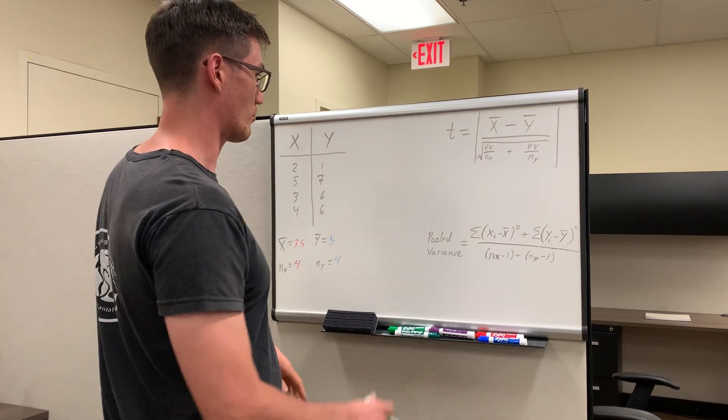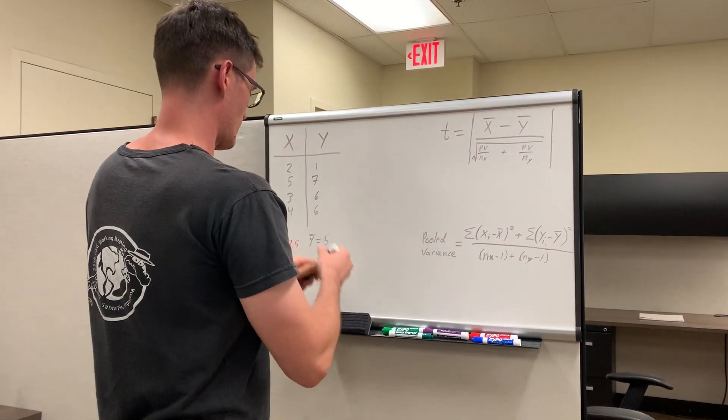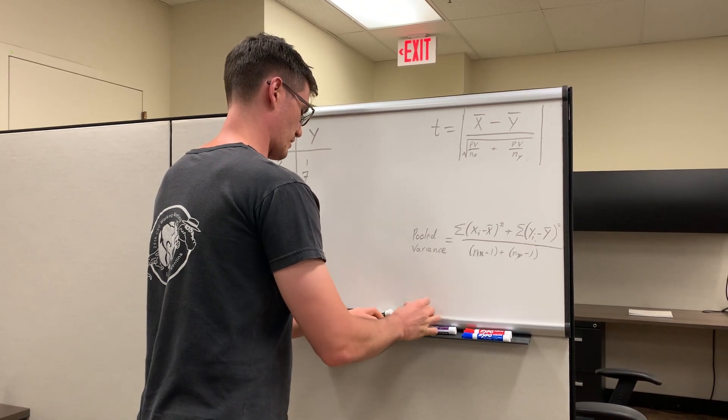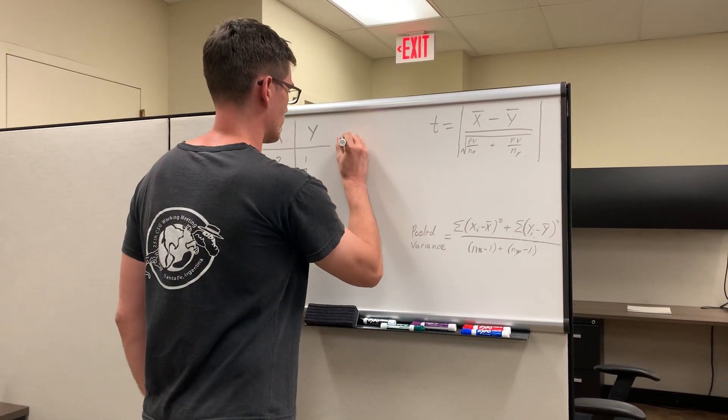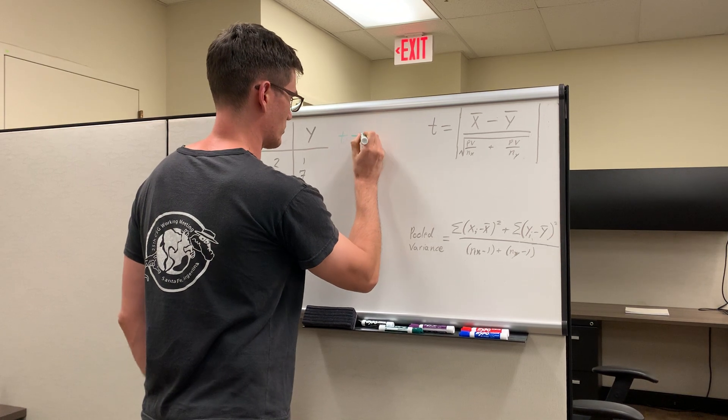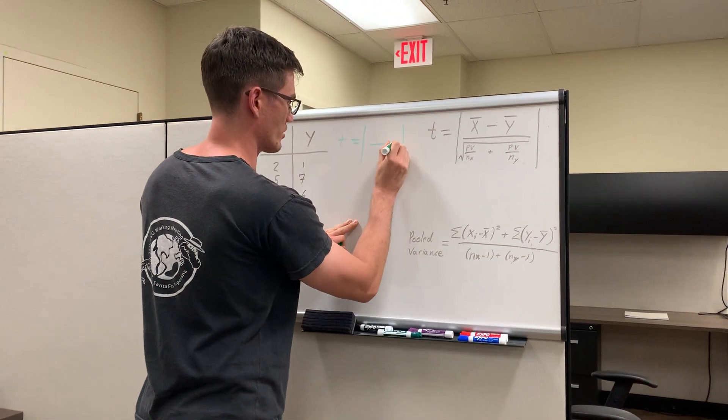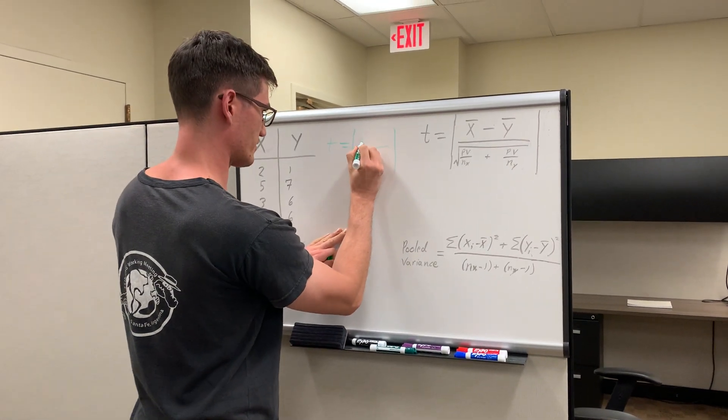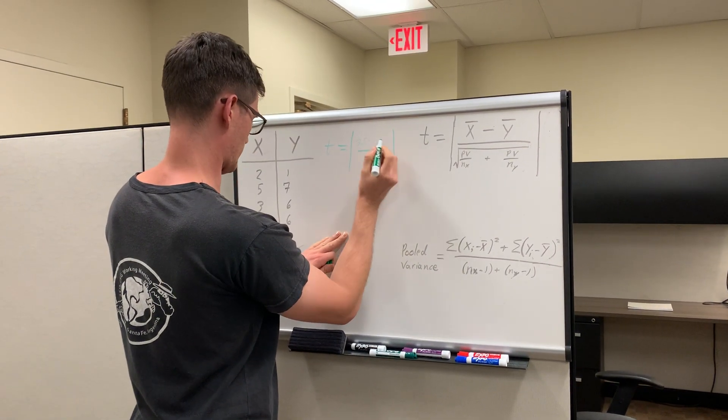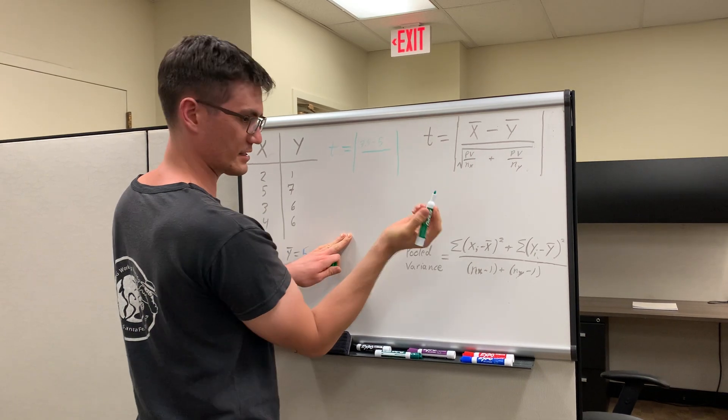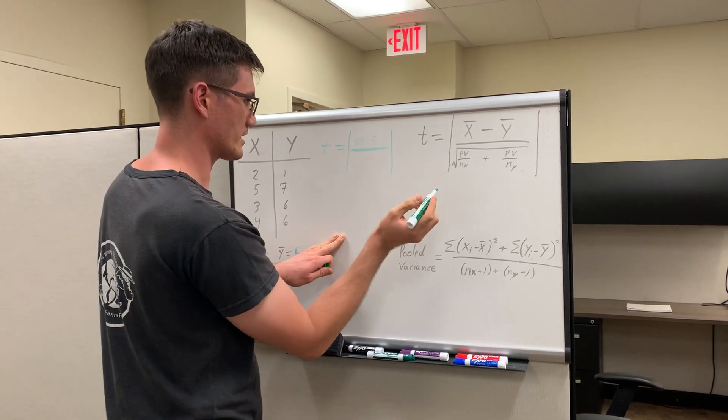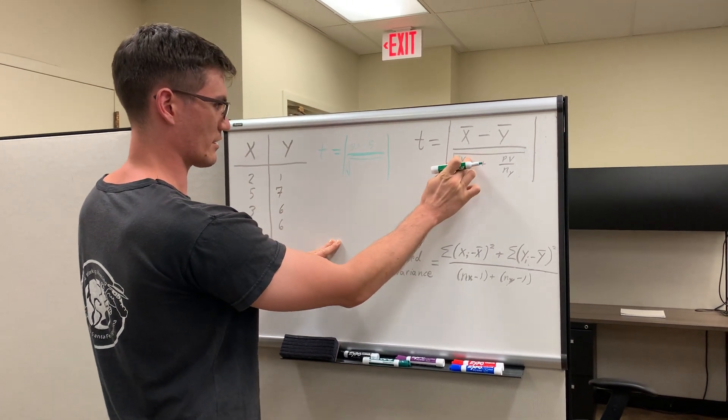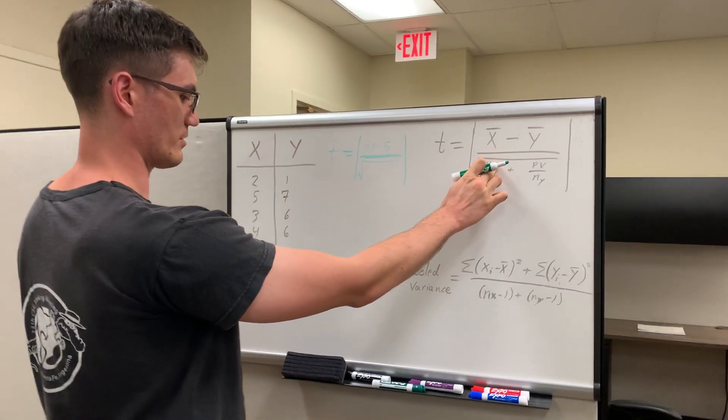All right. So, we're going to work through this t formula a bit. And then, to start, we're just going to use a different color here. So, t equals the absolute value. Start with the numerator. So, x-bar is 3.5, minus 5. Pretty easy so far. But, when we get to the denominator, you have to calculate what pooled variance is. This is where things get a little bit more complicated.